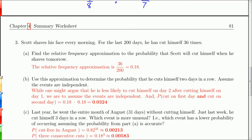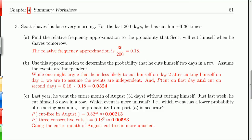A relative frequency probability example: Scott shaves his face every morning, and for the last 200 days he has cut himself 36 times. Using the relative frequency approximation, the probability that Scott will cut himself when he shaves tomorrow is 36 out of 200, or 0.18.